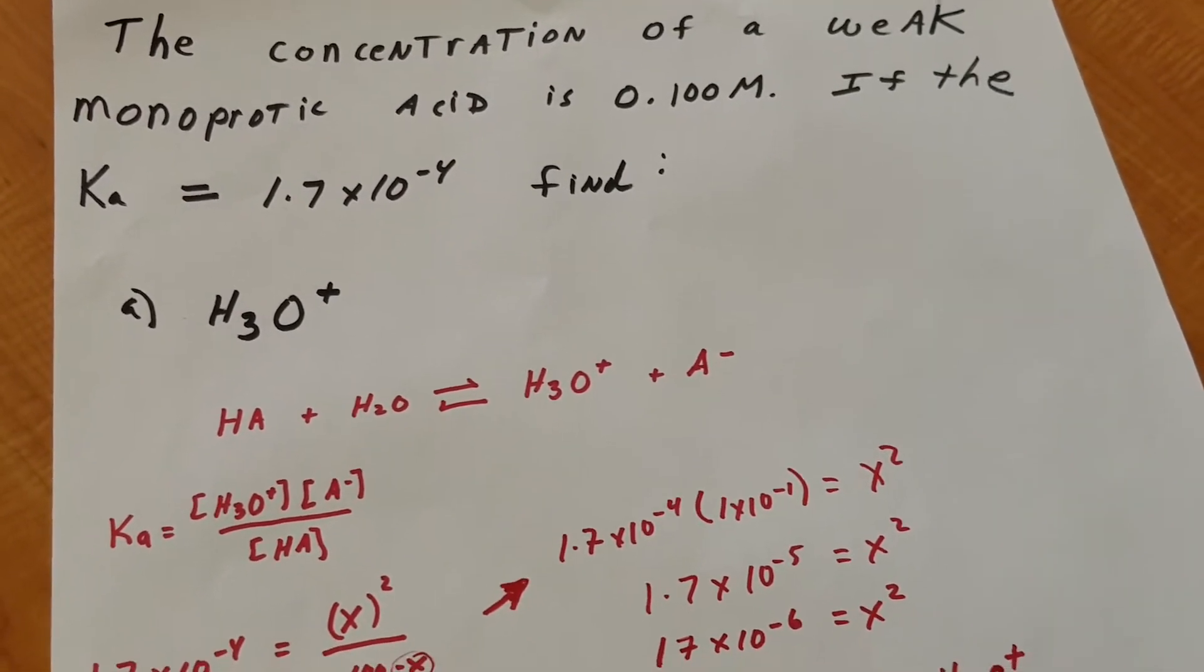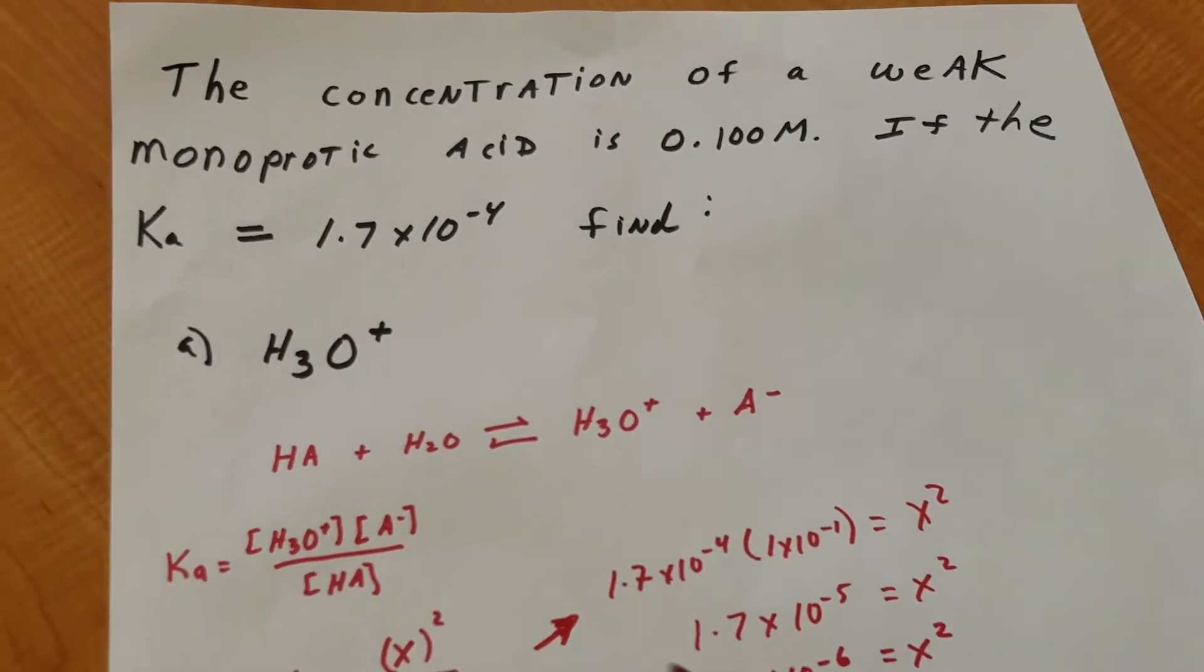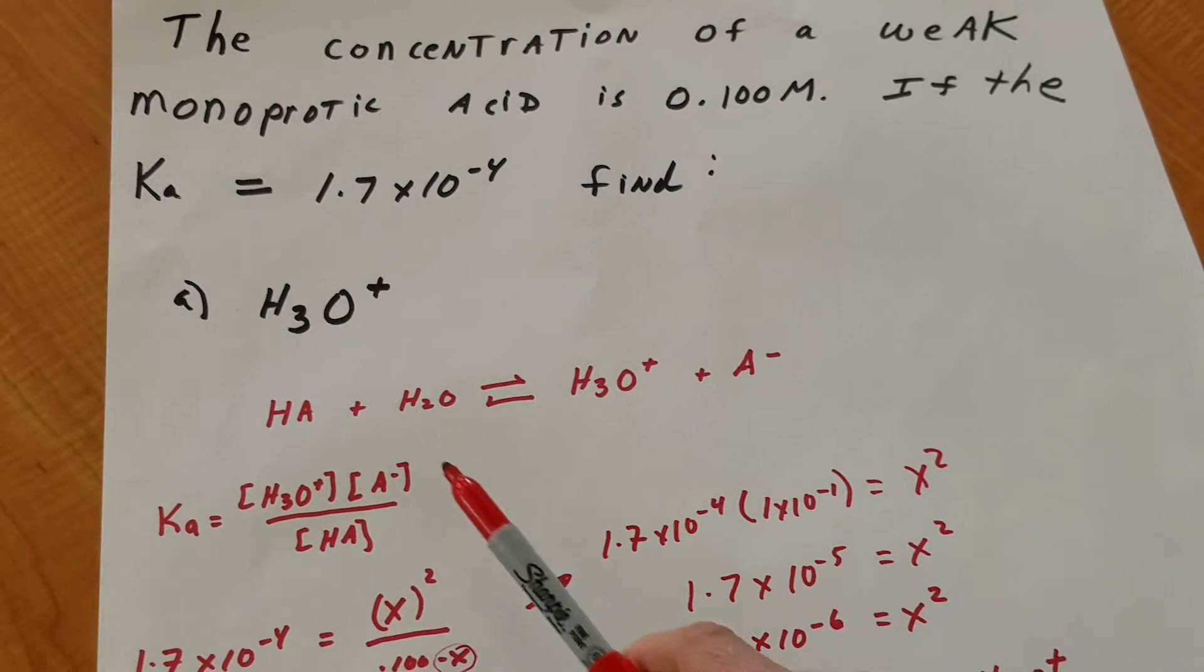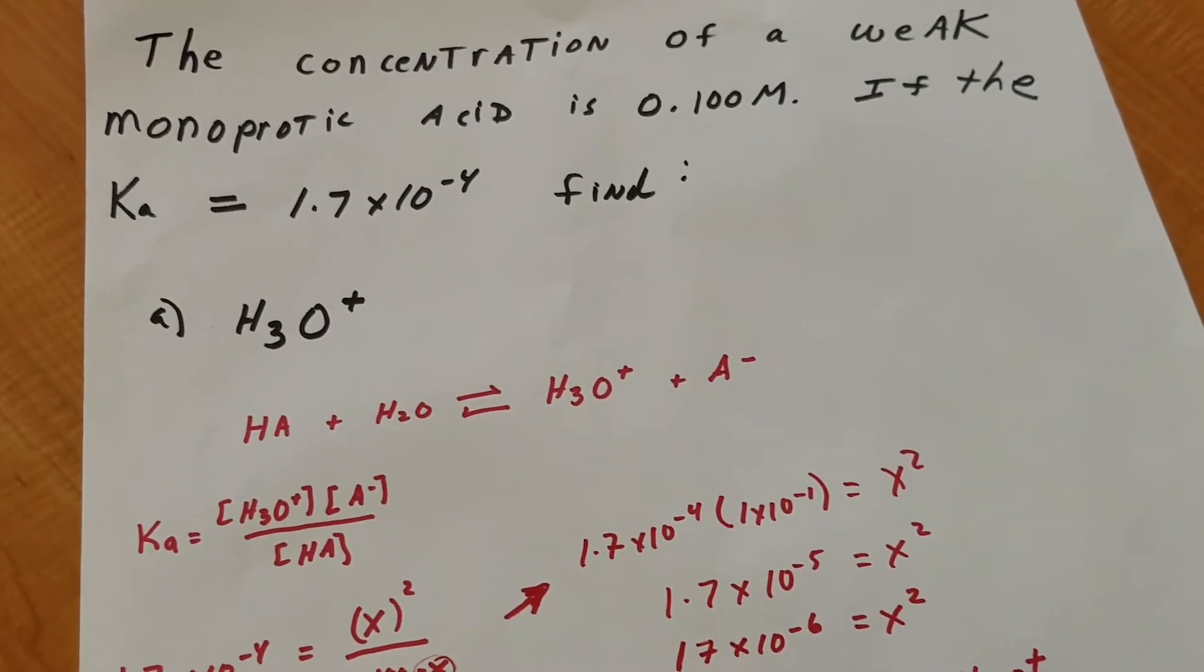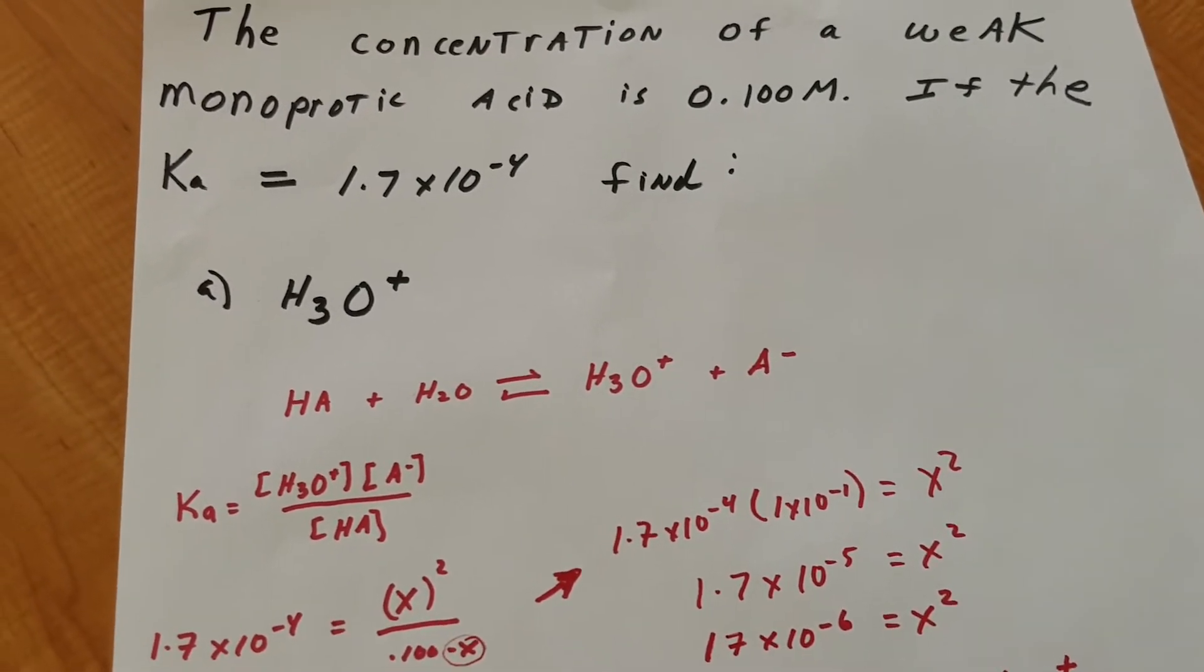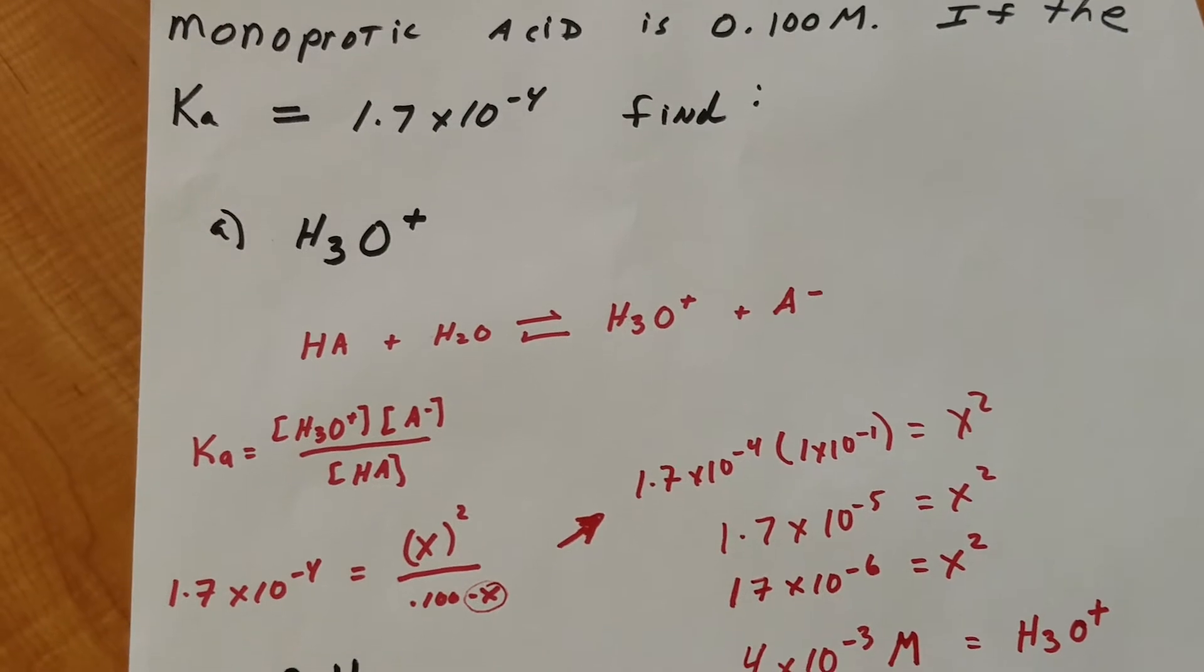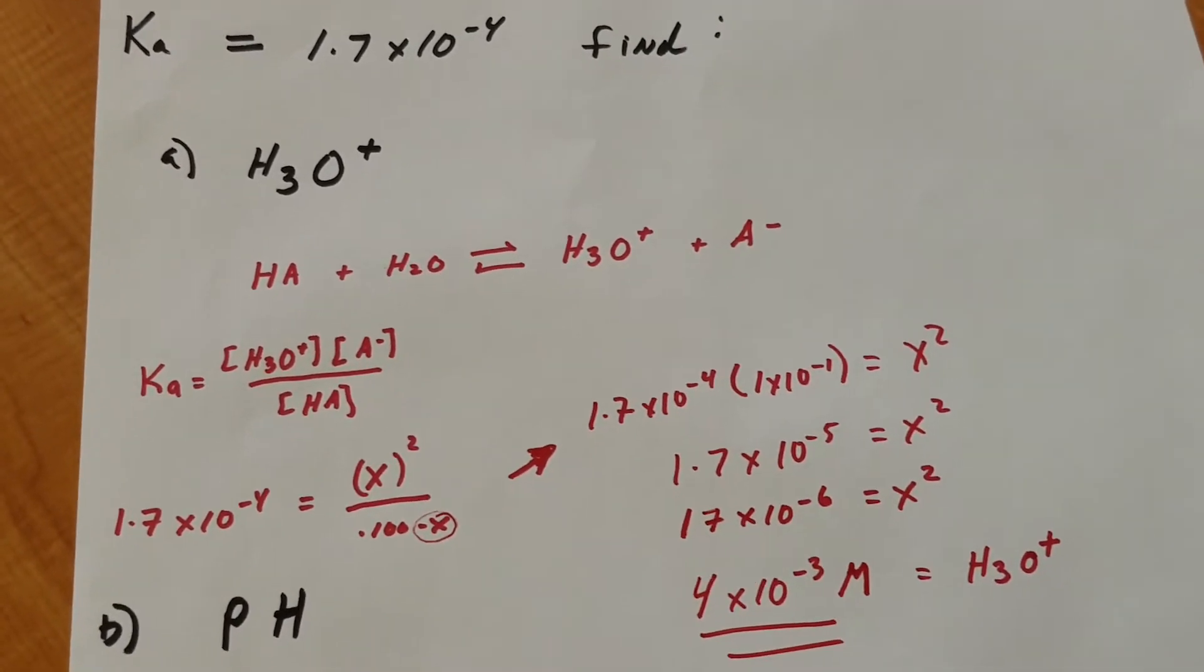The first thing we want to do is, the minute you see it's a weak monoprotic acid, we're gonna call it HA. And what we're gonna do is, we're gonna take it and we're gonna put it in water. And we're gonna agree as a team, in general chemistry, we're always going to assume the solvent is water, unless otherwise noted. So you took HA plus water, it gave off an H, and you get H3O+ plus A-.